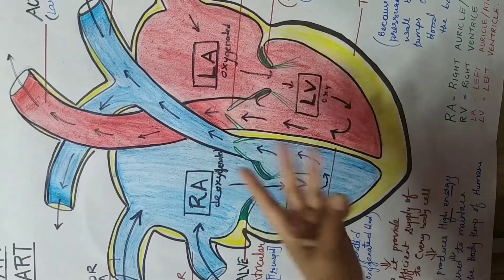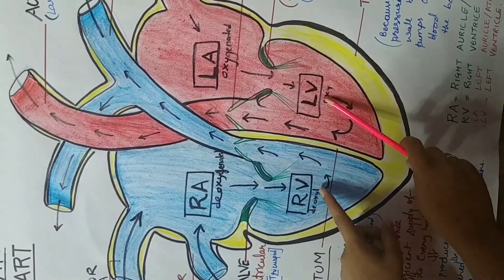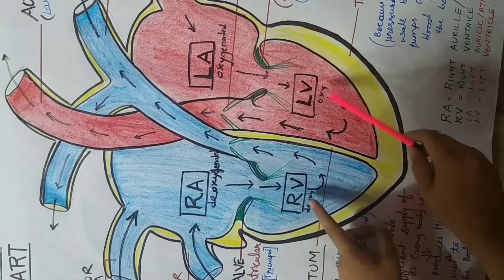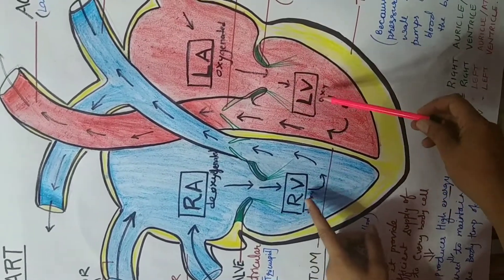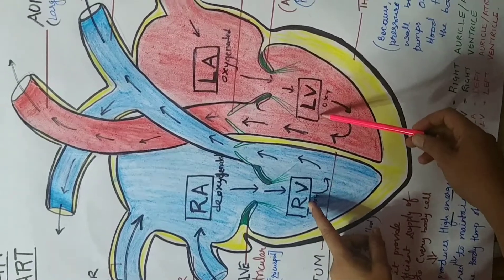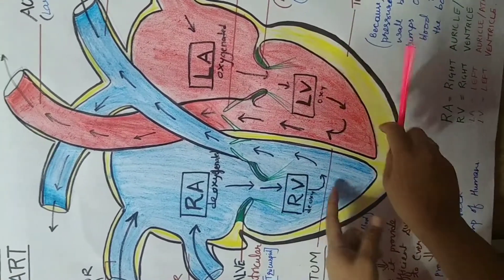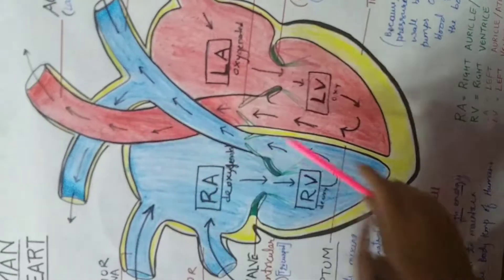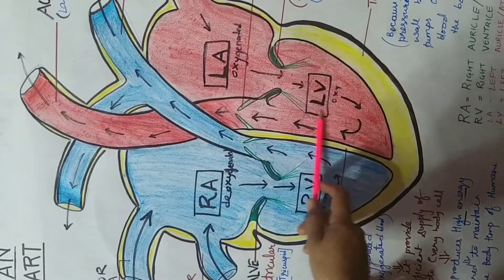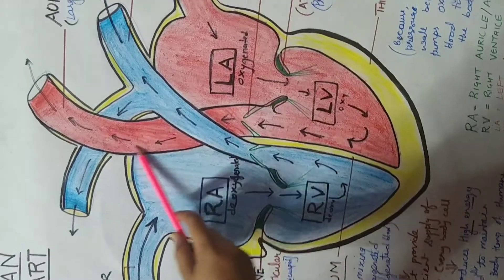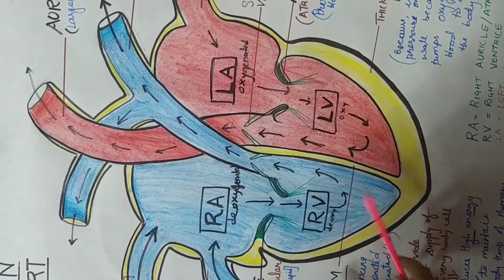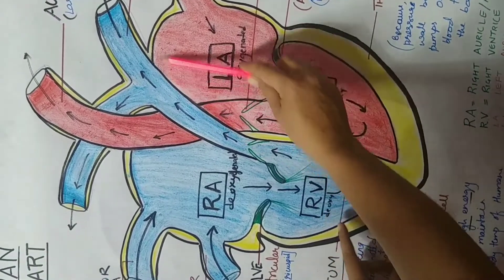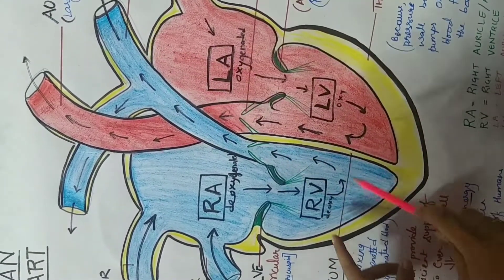In the third step, both lower chambers — right ventricle and left ventricle — are filled with blood and then contract, draining their blood into the respective arteries. From the left ventricle, blood enters the aorta, which is the largest artery of the body. From the right ventricle, blood enters the pulmonary artery.